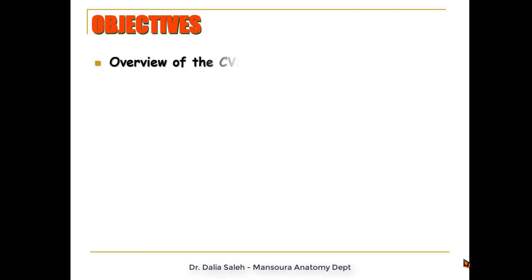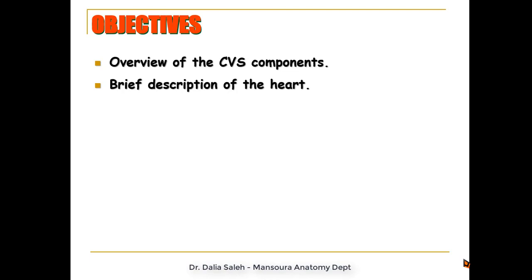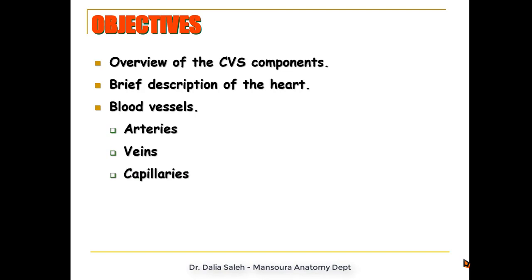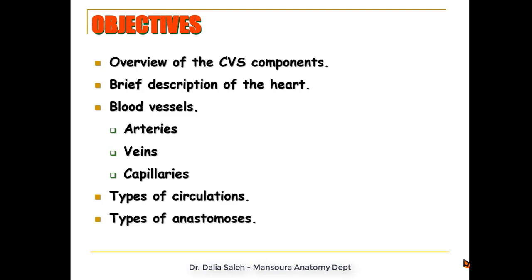The objectives of this presentation are: first, an overview of the cardiovascular system components; then a brief description of the heart; then the blood vessels — arteries, veins, and capillaries — and how to differentiate between these three; then the types of circulations and the types of anastomosis.